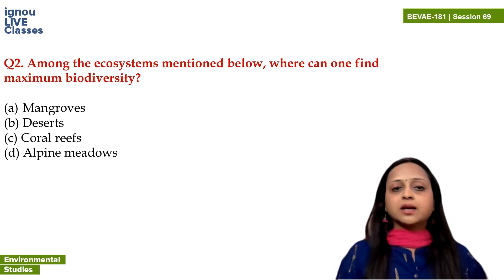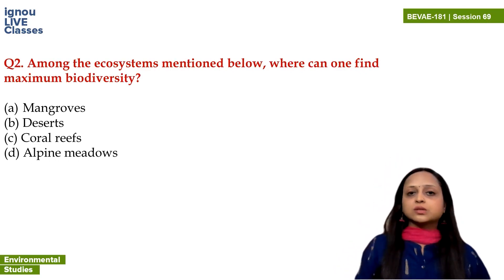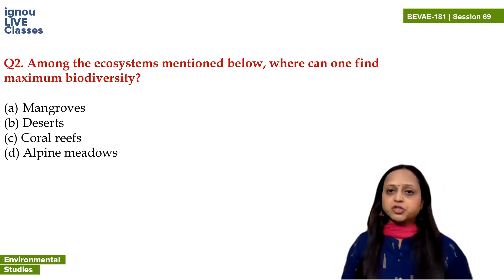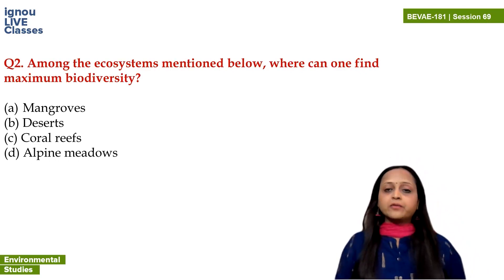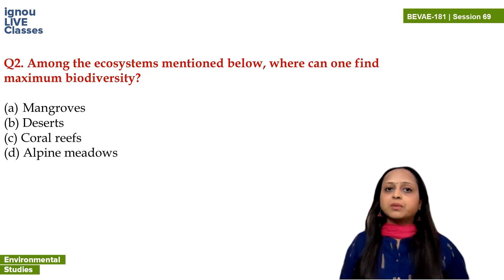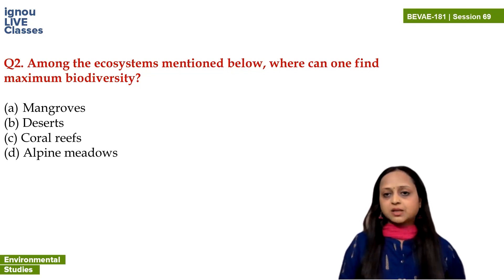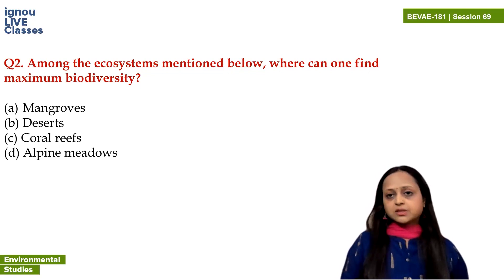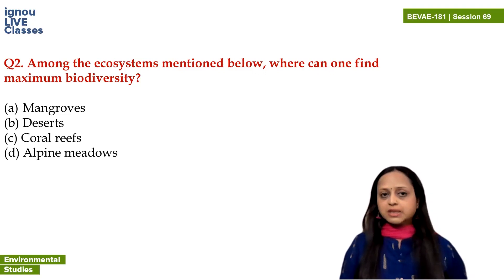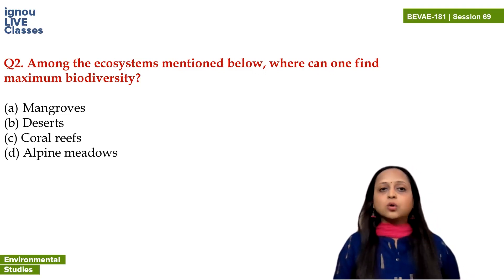Next question: among the ecosystems mentioned below, where can one find the maximum biodiversity? The diversity of species is the most important consideration here.